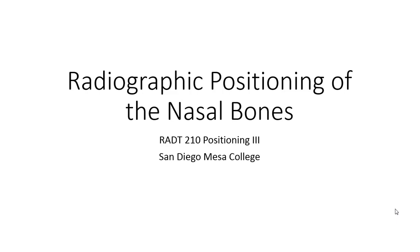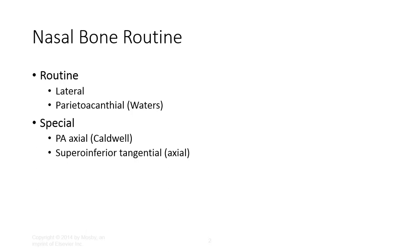In this video, we're going to go over the radiographic positioning for the nasal bones. Primary projections include the lateral and the Waters view. Some facilities may require right and left laterals to be performed. Additional views include the PA Caldwell and the superior-inferior tangential projection. We've recently removed the latter view since it's not included on the registry any longer.